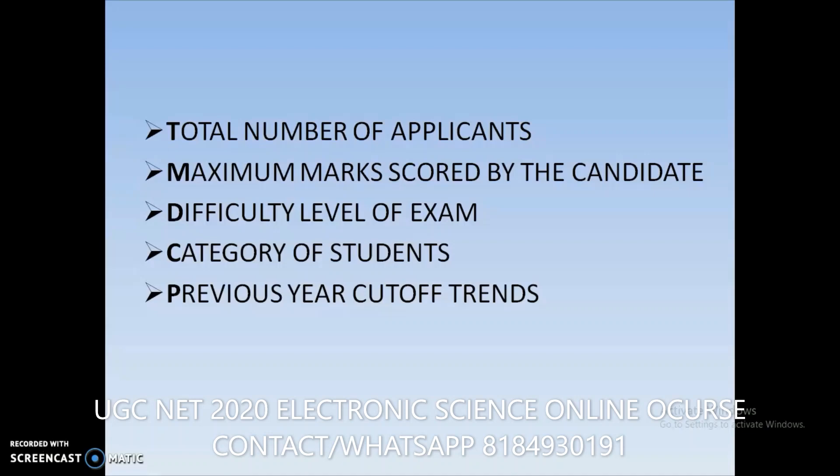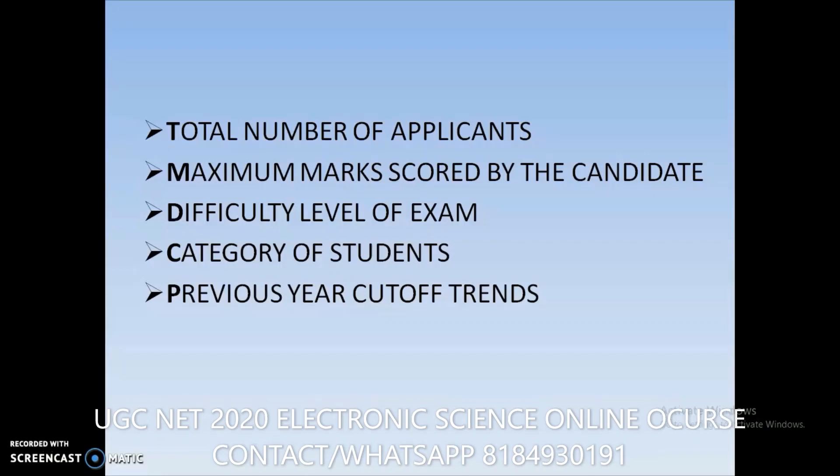The last factor is previous year cutoff trends. Based on the previous year cutoffs, we can estimate the current year's cutoff. The trend is generally followed with a variation of plus or minus five percent.